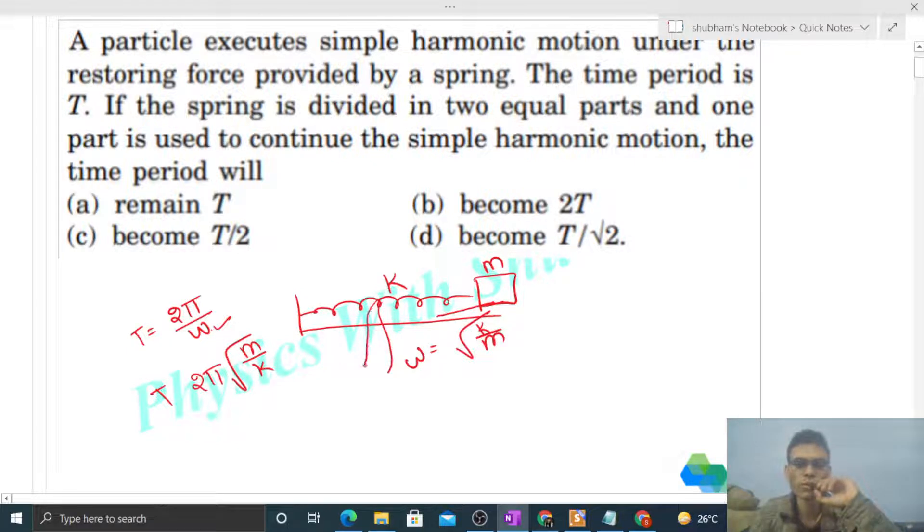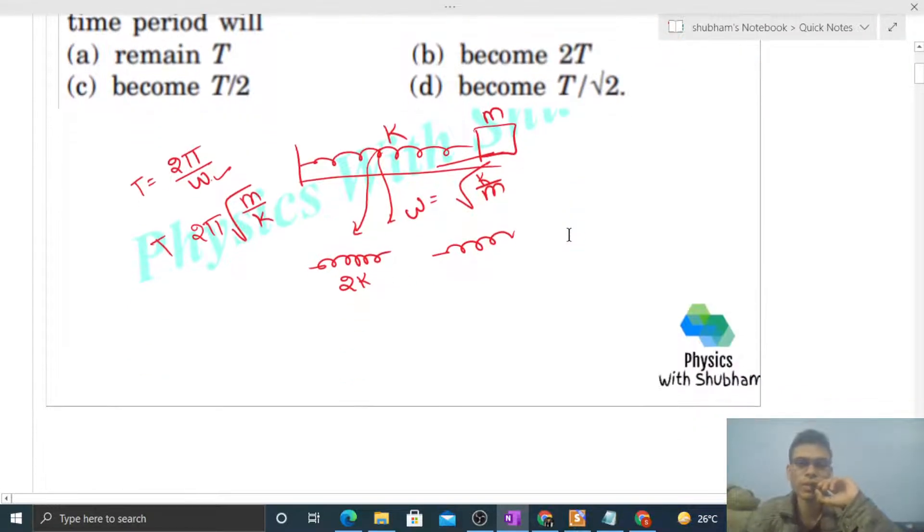Now what happens? If we divide the spring into two equal parts, then what will happen to the spring constant? If we divide this spring into two equal parts, then the spring constant of each spring will be 2k. If the spring's length is halved, then the spring constant will double.